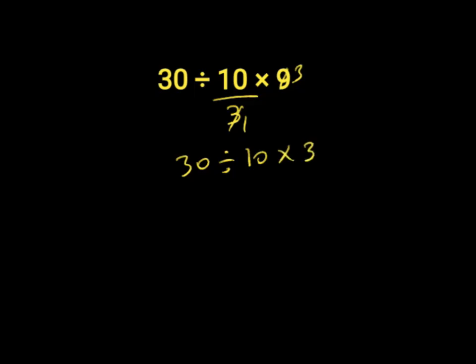Times 3. 30 divided by 10 will give us 3, then we have 3 times 3. 3 times 3 is 9, which is wrong because according to the order of operations, division and multiplication have equal priorities, so we are to work from our left to our right.